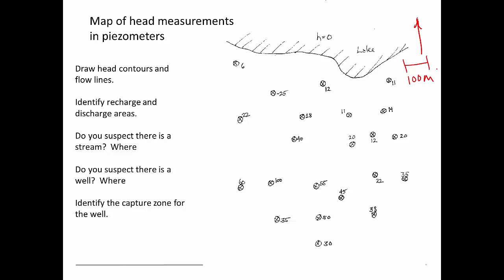This is a map that shows some wells. They're indicated by these circles with a cross, and next to the well I've written the hydraulic head that's measured at that well.